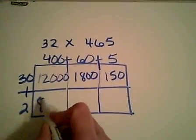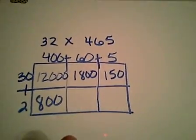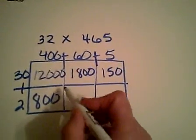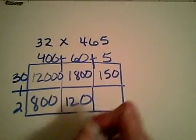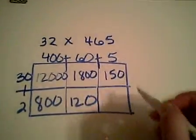Two times 4, 8. Carry my two zeros. Two times 6, 12. One zero. Two times 5, 10.